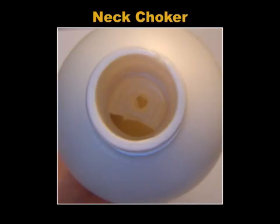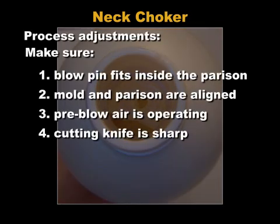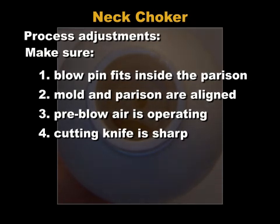Neck chokers are bits of plastic stuck inside the container. If the blow pin enters a parison that is not fully open, the pin can drag part of the parison with it; this plastic stays inside the neck and obstructs the fill hole. There are four possible causes: first, make sure the blow pin fits inside the parison; second, that the mold and parison are aligned; third, that the pre-blow air is operating; and fourth, that the cutting knife is sharp. You may also have to adjust the delay timers.